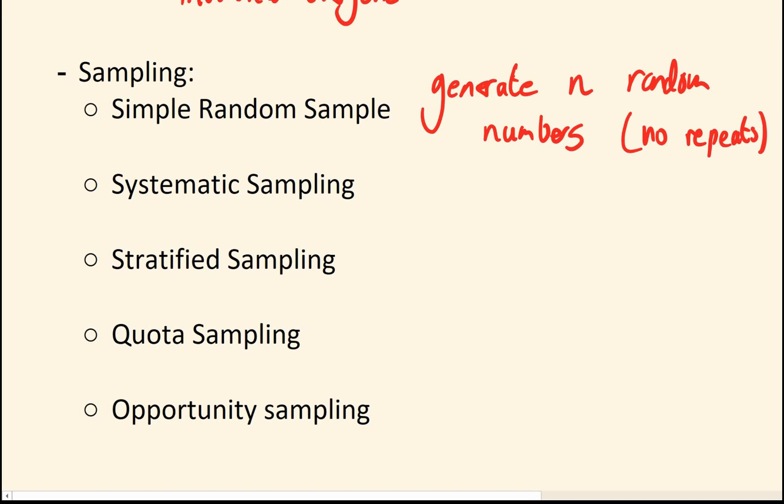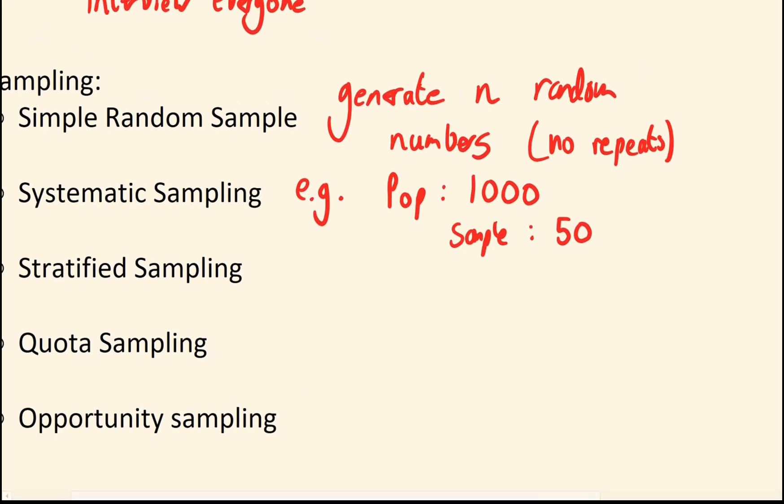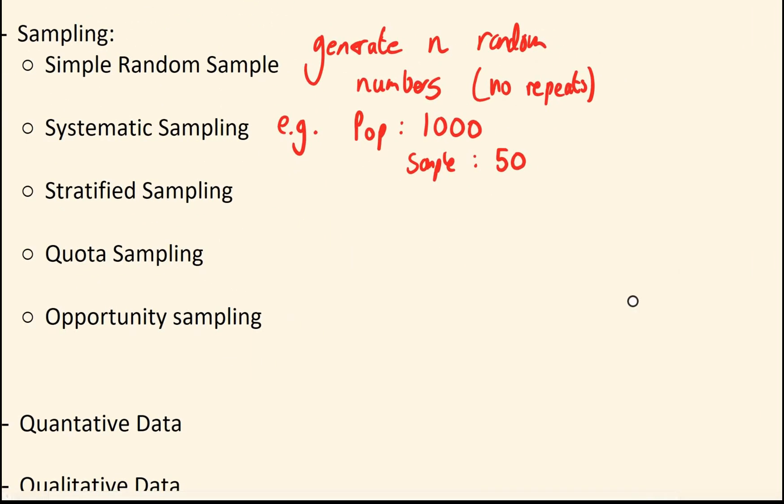Next we have systematic sampling. This is the same idea except you're going to go through the population in the same jumps. So for an example, if you had a population of 1000 and you wanted a sample of 50, what you could do is you could pick a random person, pick a random number from 1 to 5 and then we're going to add 5 to that number each time.